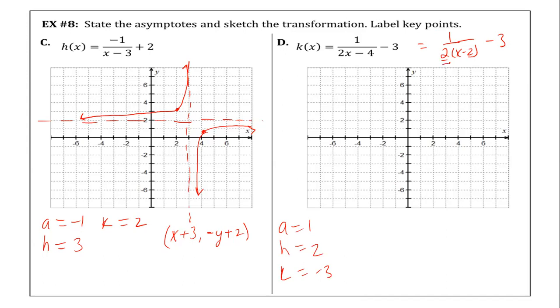Now we have a new guy at play. That new guy is our B and B equals two. So we talked about A and K. These two affect our Y. H and B affect our X. Does that make sense?